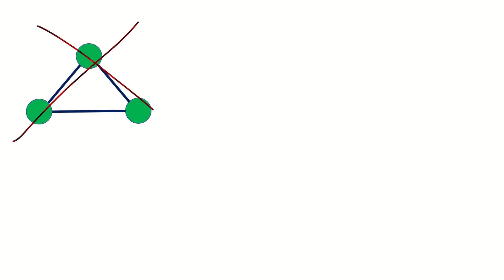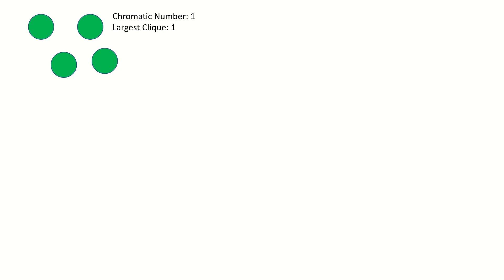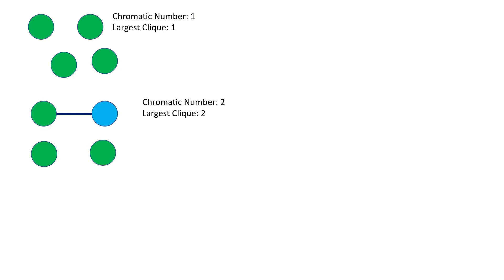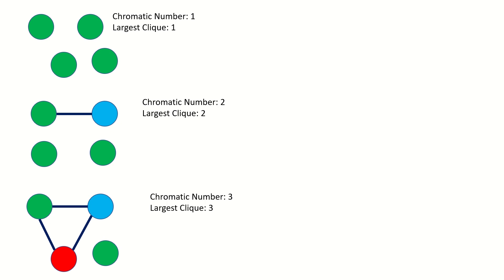So you might be wondering, why is the Mycielsky construction so important? It's important because it allows us to prove a powerful result: that there exist triangle-free graphs — that is, graphs without a 3-clique — of arbitrarily high chromatic number. If you start with a triangle-free graph and increase the size of the largest clique to increase its chromatic number, very soon the graph would not be triangle-free, as any clique on 3 or more vertices contains a triangle. So how can we make the chromatic number arbitrarily high without introducing a triangle? That is the genius of the Mycielsky construction.